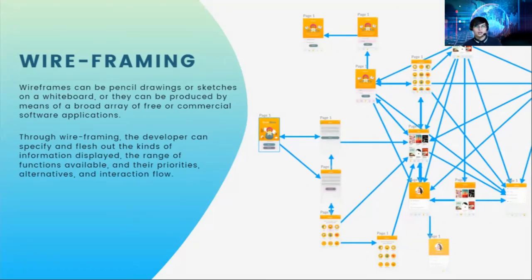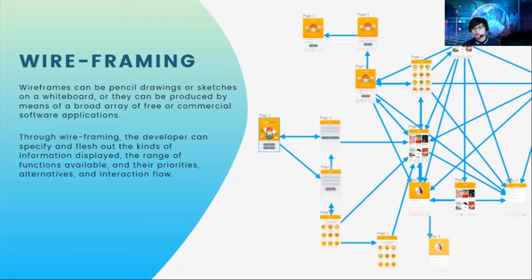They can also be produced by means of a broad array of free or commercial software applications. A wireframing tool will be provided, but you can also use pen and paper. Through wireframing, the developer can specify and flesh out the kinds of information displayed, the range of functions available, prioritized alternatives, and interaction flow. This allows the developer to visualize what the complete software will look like. This is one of the most important steps.